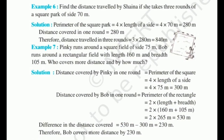Pinky runs around a square field of side 75 meters. Bob runs around a rectangular field with length 160 meters and breadth 105 meters. Who covers more distance and by how much? Distance covered by Pinky is 4 into 75, which equals 300 meters. Distance covered by Bob is 2 into (160 plus 105), which is 2 into 265, which equals 530 meters. Difference is 530 minus 300, which equals 230 meters. Therefore, Bob covers more distance by 230 meters.